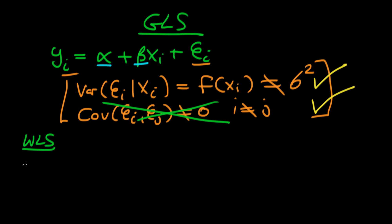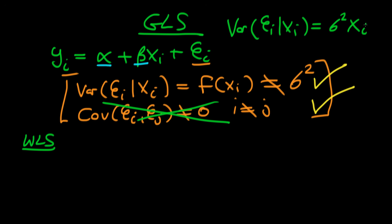In weighted least squares, an example condition might be that the variance of our error term given xi equals σ² — a positive constant — times our independent variable xi. That would be the condition on our errors which we need to be able to estimate a weighted least squares model.